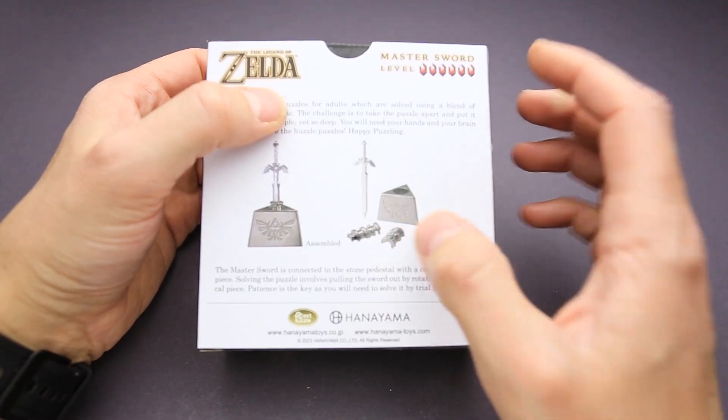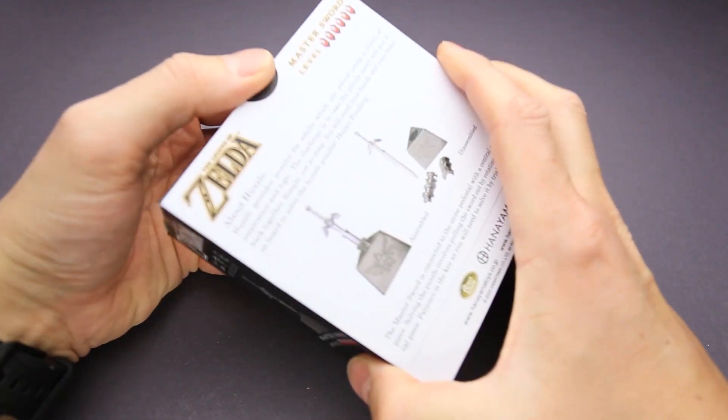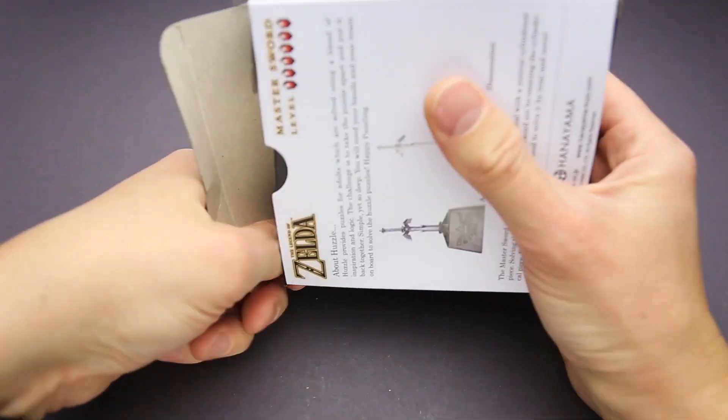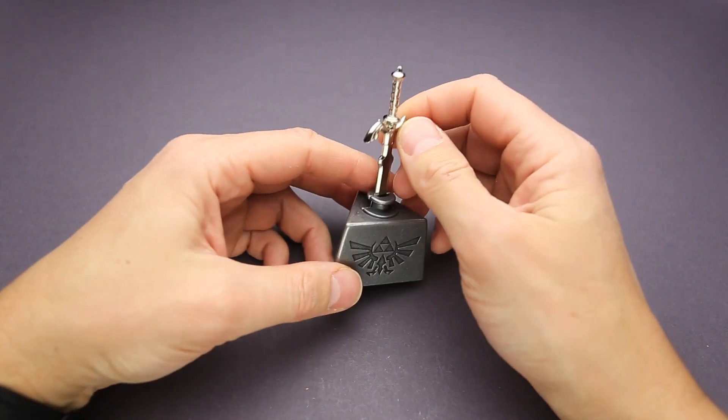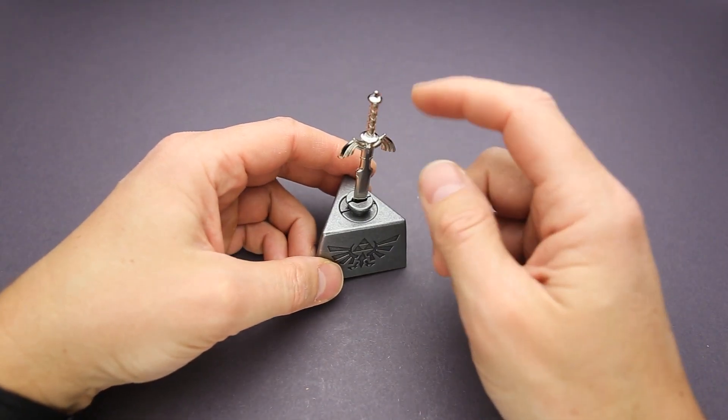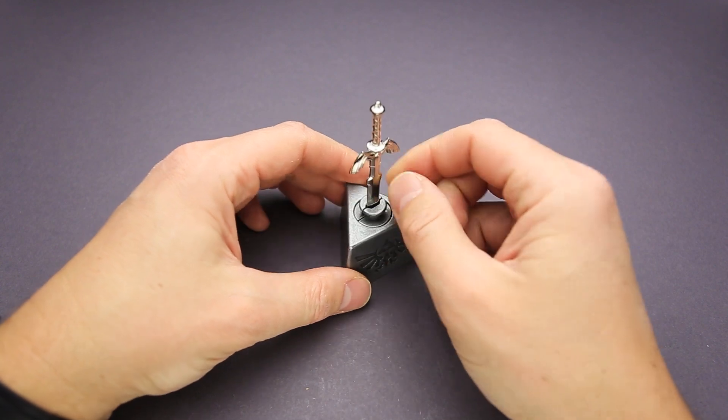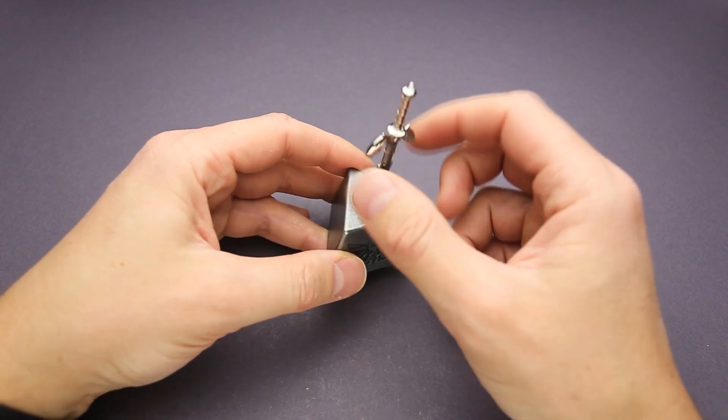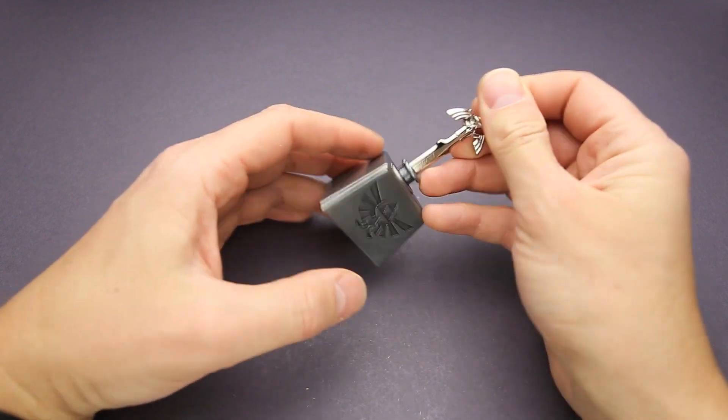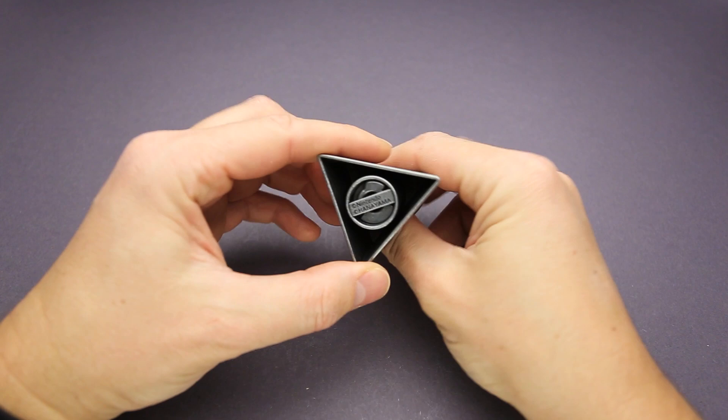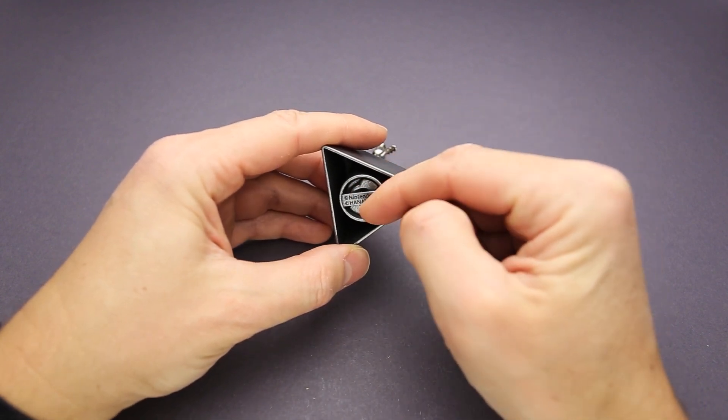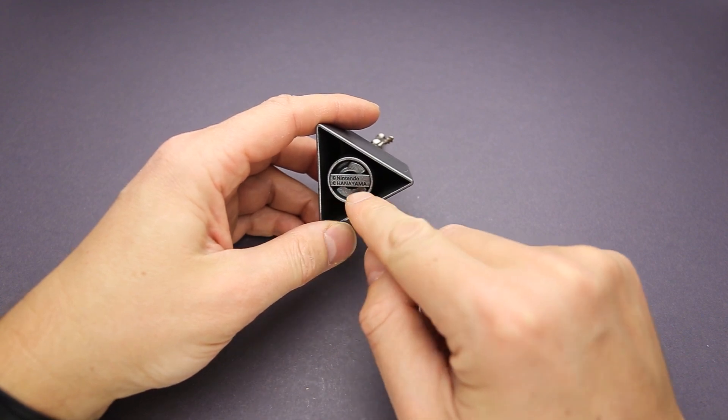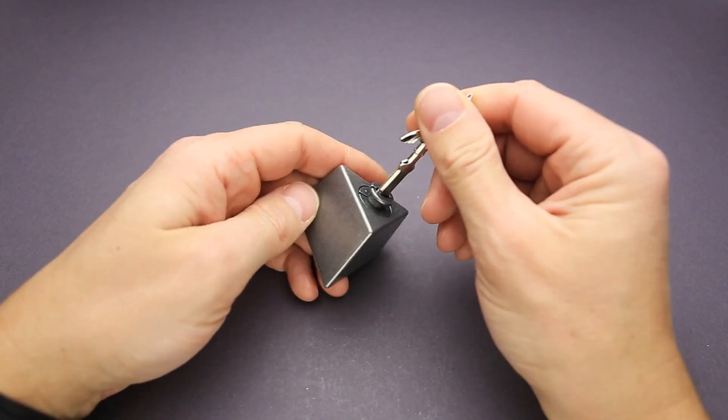And the goal will be to remove the sword. This one will be a little bit more difficult to solve. So let's see. We have four parts, the base, the sword, and the sword is held by two parts that are in the base. And I have to remove them. I can't put these parts through this opening. Oh, there's Nintendo name next to the Hanayama. Quite unusual for Hanayama puzzles.